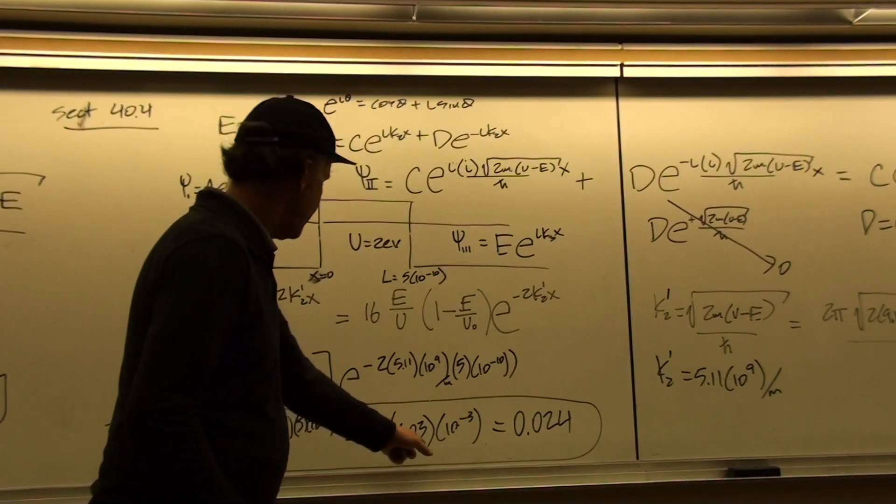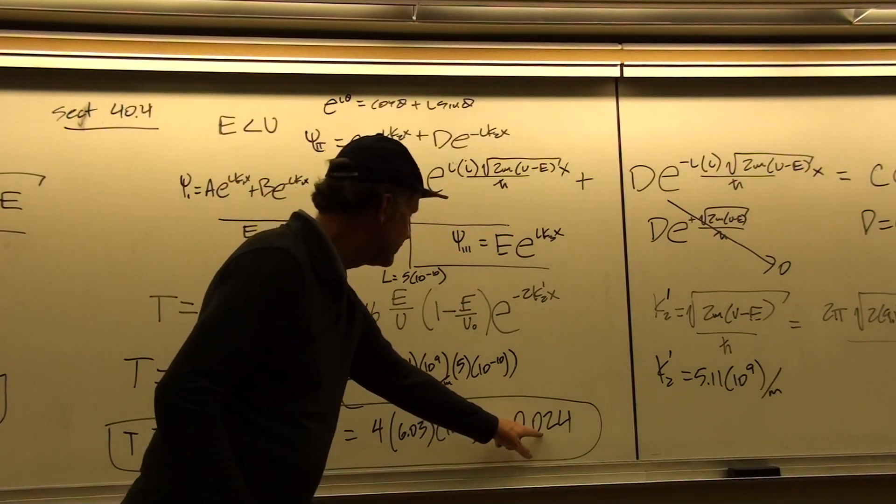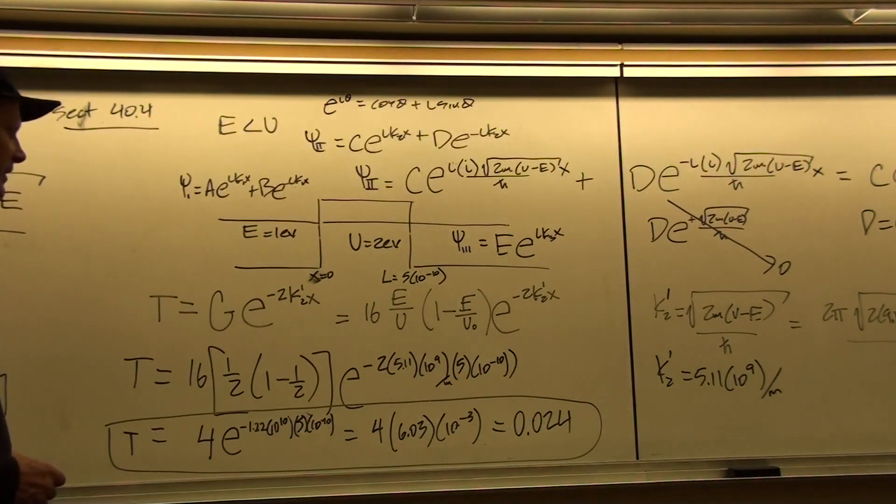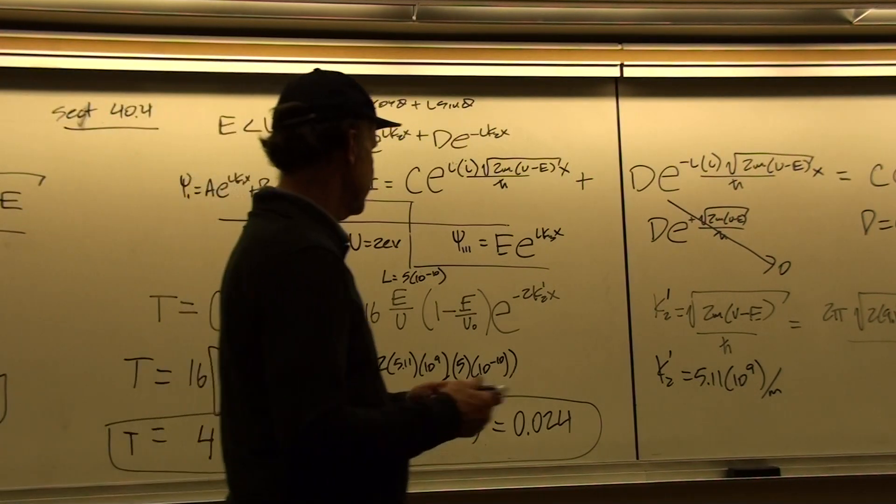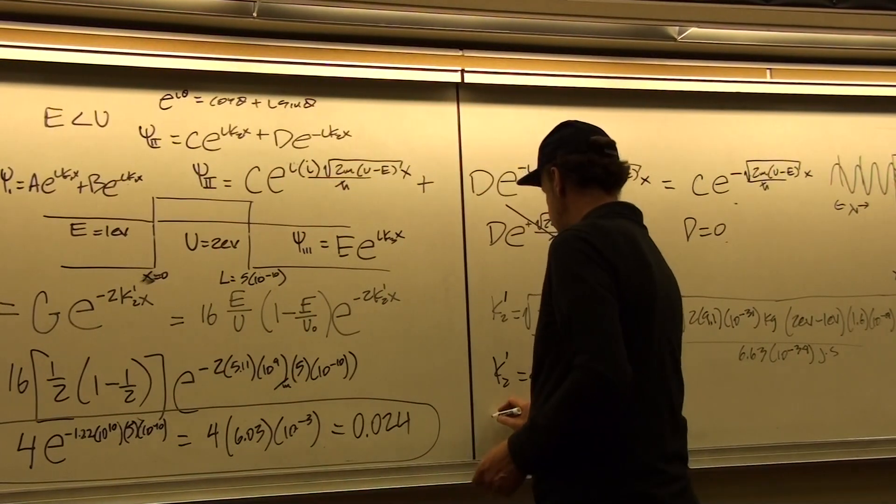So we work that out, plug in the numbers, we get 0.024. So that means that there is basically a 2.4% chance of tunneling through the barrier.